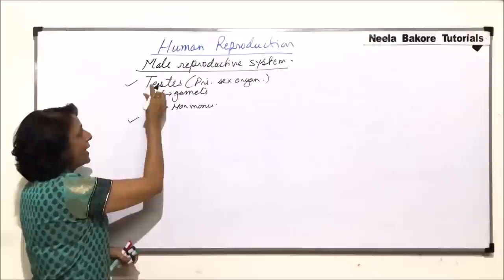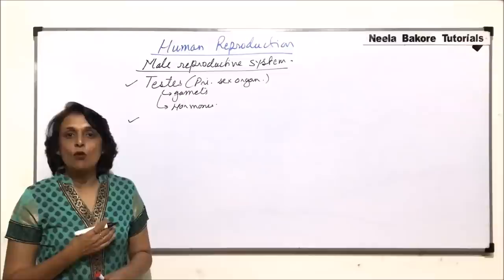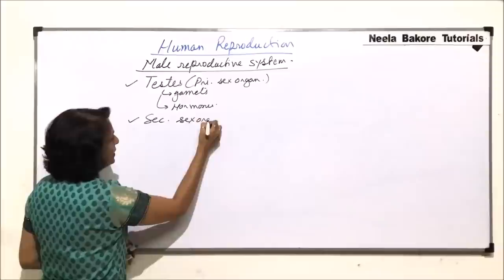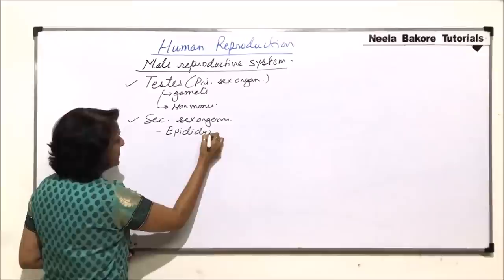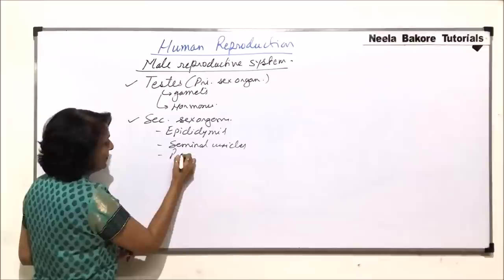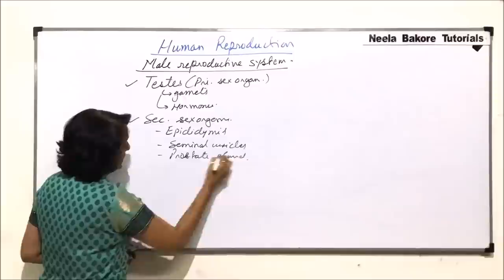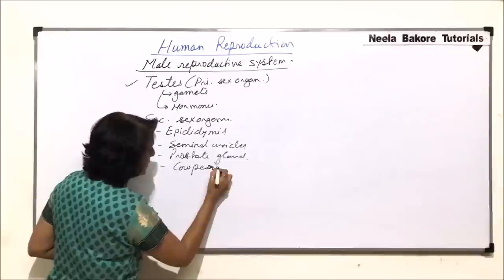To help this primary sex organ, there are some accessory or helping sex organs, which are known as secondary sex organs or accessory sex organs. These include certain structures and glands such as epididymis, seminal vesicle, prostate gland, and Cowper's glands.